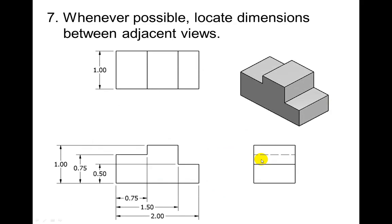The seventh one, whenever possible, locate dimensions between adjacent views. Notice how all the other ones that you've been looking at have been in between these adjacent views, except for this one right here. Whenever possible you want to keep them in between. It's the most natural location that you're going to look for those dimensions. So you don't want to put any on the outside. See how these are on the outside? This would be in between adjacent views.